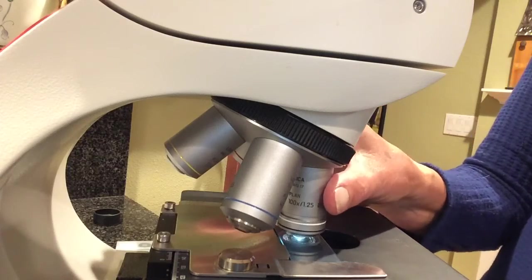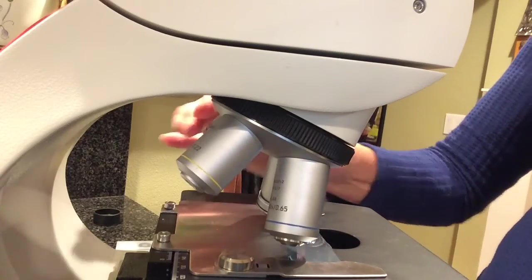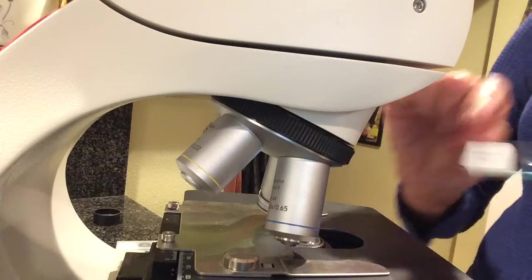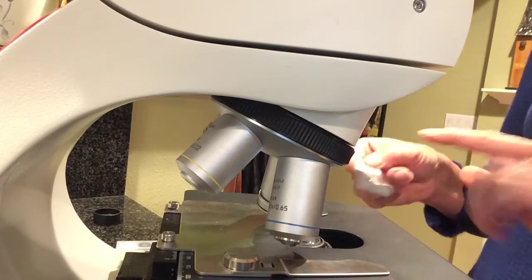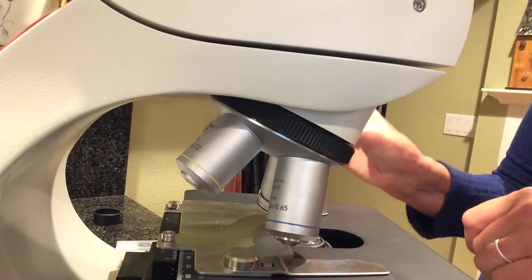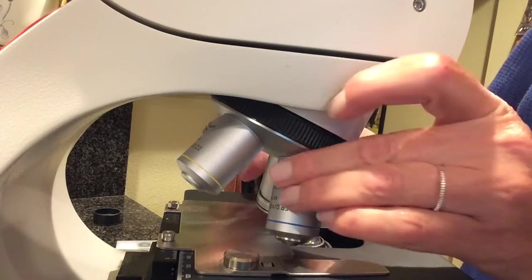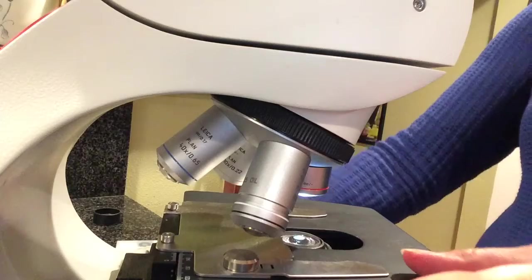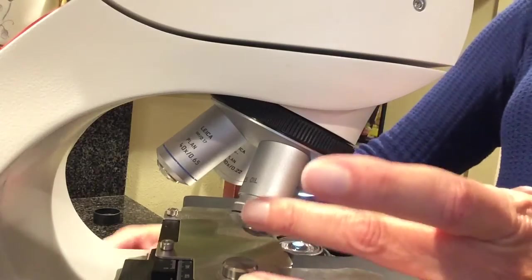Then to clean it, you're going to swing it back. You can take the slide out. You can clean the surface of your slide with your alcohol wipe, or just with soap and water honestly. And then you can bring the stage down and clean the end of your thousand X lens.